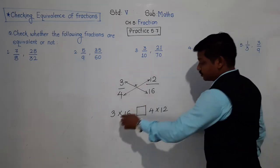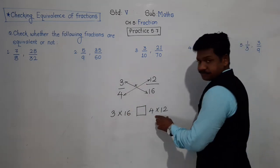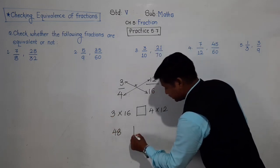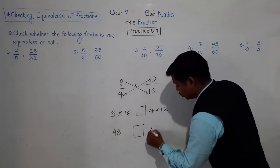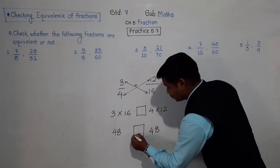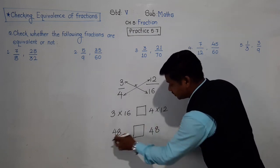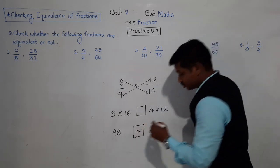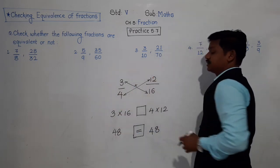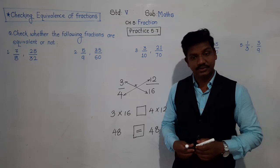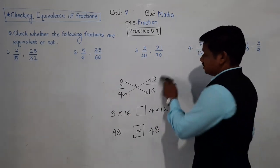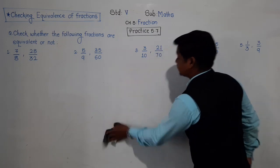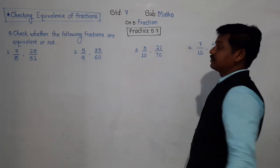Let's apply it. 16 threes are 48, and 12 fours are also 48. So the cross products of both fractions are equal — 48 equals 48. Therefore, 3 upon 4 and 12 upon 16 are equivalent. In this way we are going to check whether given fractions are equivalent or not.